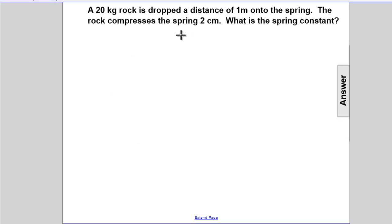A 20-kilogram rock is dropped a distance of 1 meter onto a spring. The rock compresses the spring by 2 centimeters. What is the spring constant?